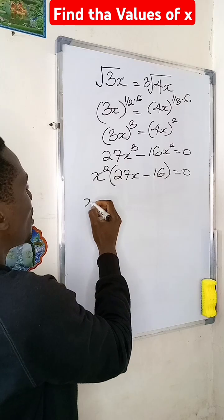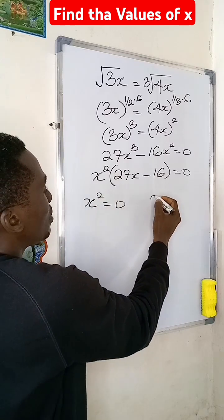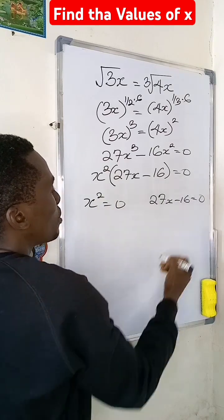Now this is zero product rule. From here, my x squared is equal to 0, and then my 27x minus 16 is equal to 0.